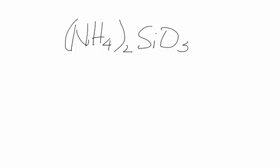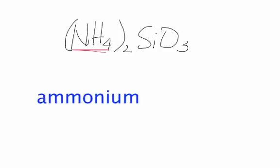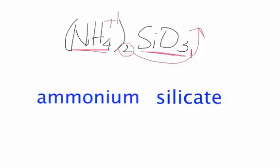Now we have (NH4)2SiO3. NH4 is ammonium. It has a +1 charge. So this 2 must come from this particular element because there's an assumption there's a 1 here. So this, according to your polyatomic ions, is silicate. So it's ammonium silicate.